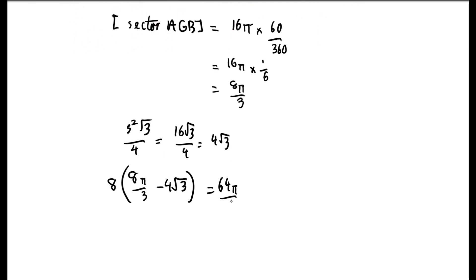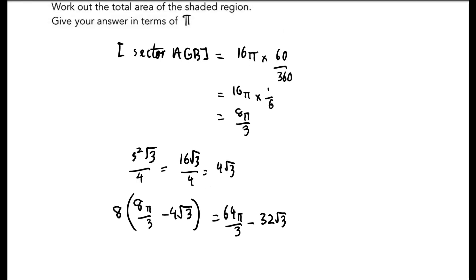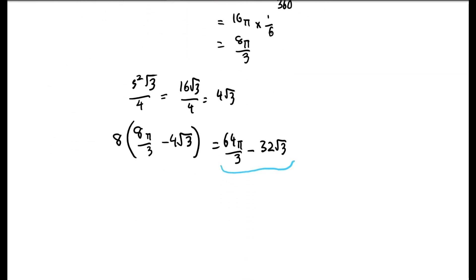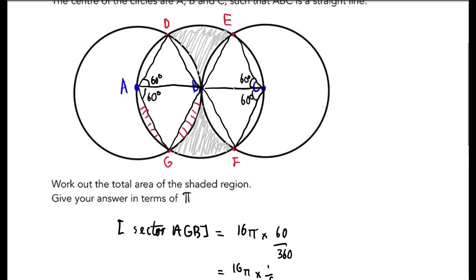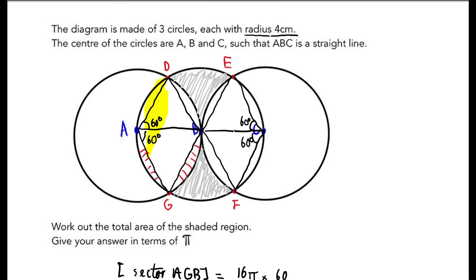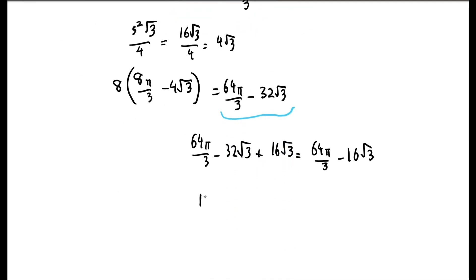So each curved section is 8 pi over 3 minus 4 root 3, and multiplying by 8 gives 64 pi over 3 minus 32 root 3. Adding the area of the four equilateral triangles — each with area 4 root 3, so 16 root 3 total — gives 64 pi over 3 minus 32 root 3 plus 16 root 3, which equals 64 pi over 3 minus 16 root 3. Subtracting this from the area of the whole circle (radius 4, area 16 pi) gives the final answer: 16 root 3 minus 16 pi over 3.